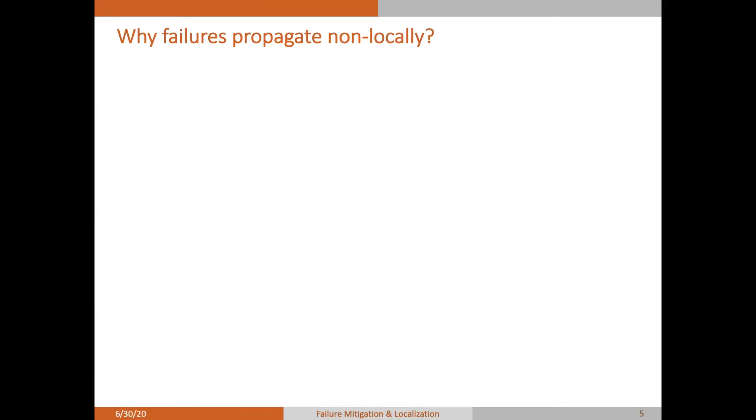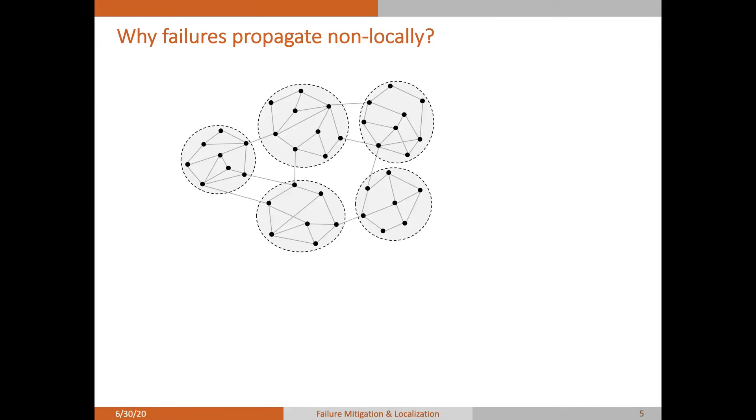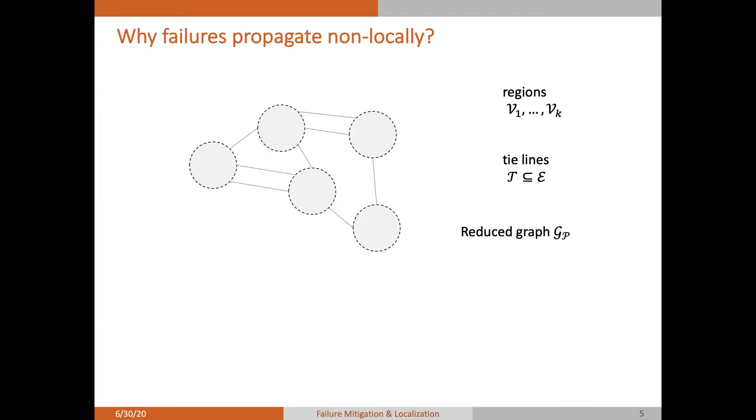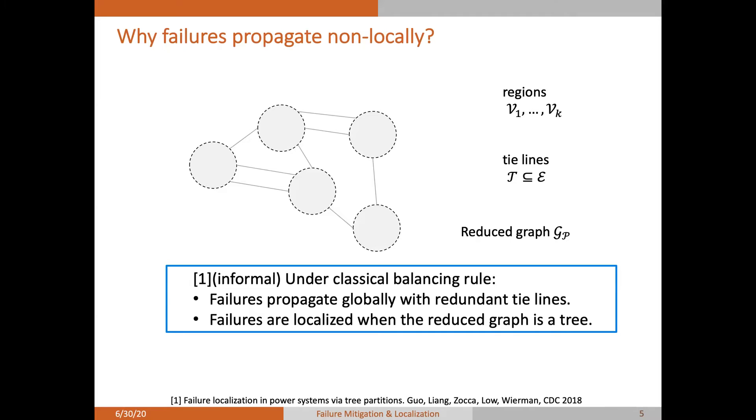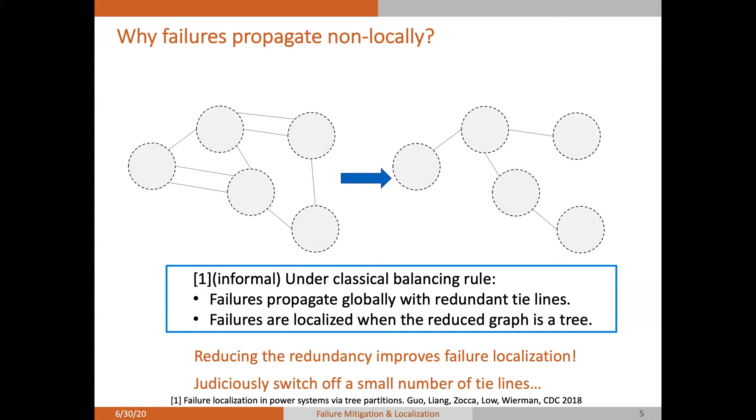With this DC model, we can actually explain the non-locality for the failure propagations. Traditionally, transmission grid is usually composed by several regions which are operated relatively independently with prescribed power exchanges through these tie lines. If we cluster the region into a super node and add an edge for each tie line connecting different regions, we can obtain the following reduced graph. A recent work has shown that the failures will propagate globally with these redundant tie lines. However, when the reduced graph is a tree, the failures will be localized within the region itself. So this actually suggests a less intuitive and a bit controversial idea that we may switch off a small number of tie lines to reduce the redundancy network and improve the failure localization.